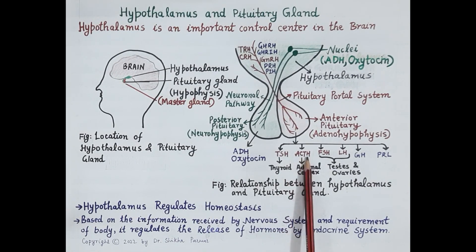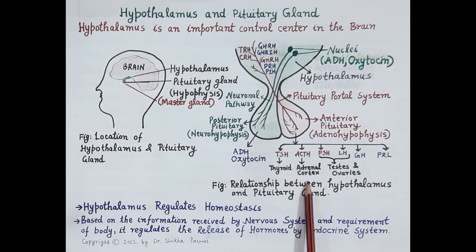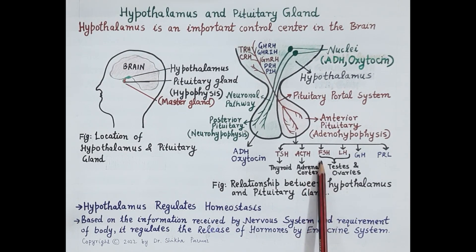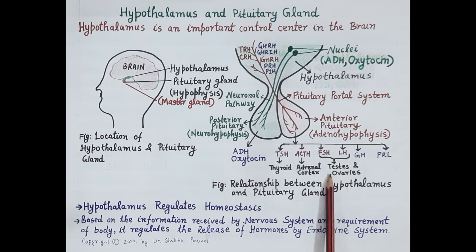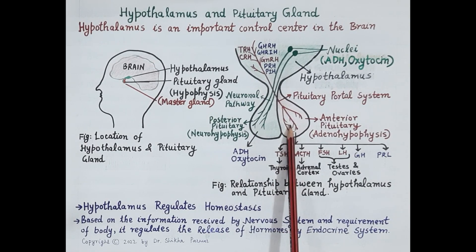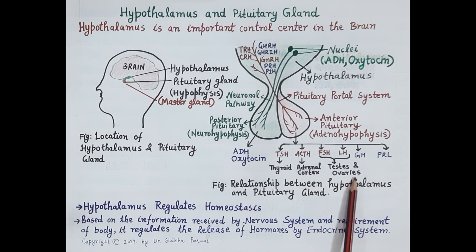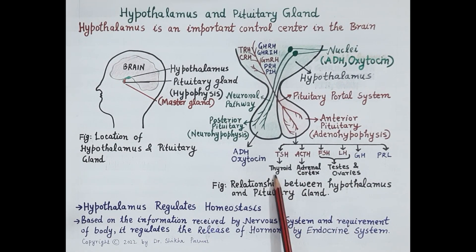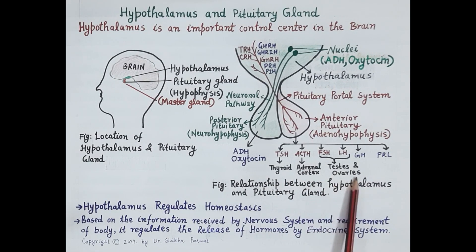FSH and LH both stimulate the testes in males and ovaries in females to produce reproductive hormones. This is how pituitary gland controls functioning and commands other endocrine glands, and thus pituitary gland is truly called as the master gland.